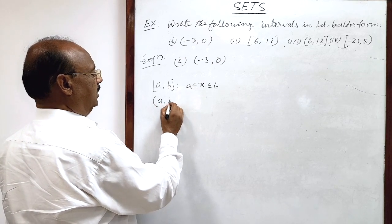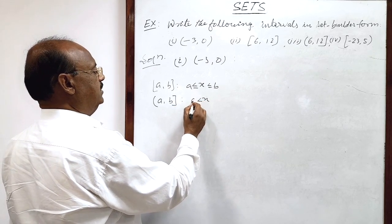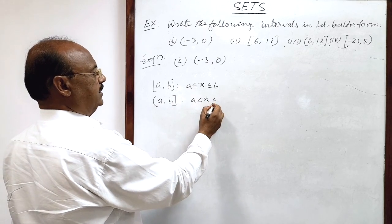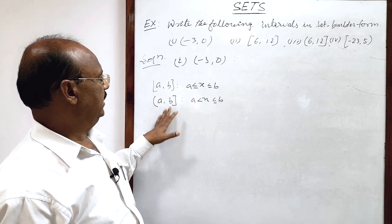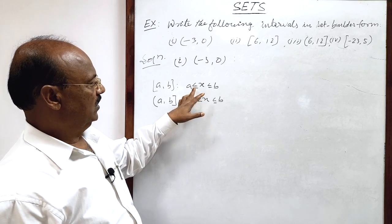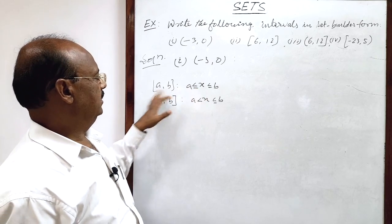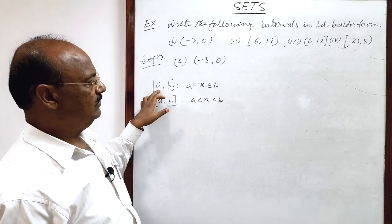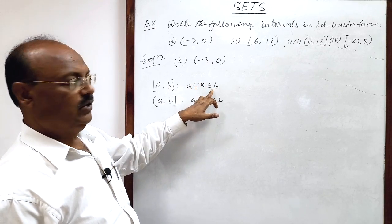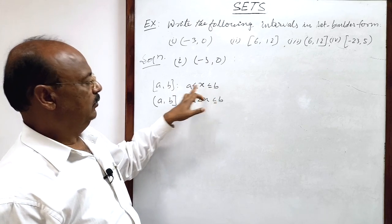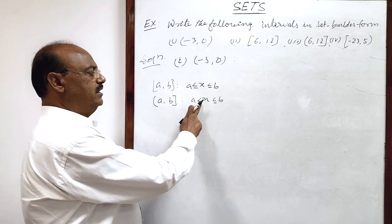But if you take open on one side and closed on another side, that interval will be like: x greater than a and less than or equal to b. The conclusion is: if in a given interval x is greater than or equal to a — if equality is there — then that side will be closed. So x lies between a and b, equal to a and b also. Due to this equality sign, both a and b are considered, so this interval is closed on both sides.